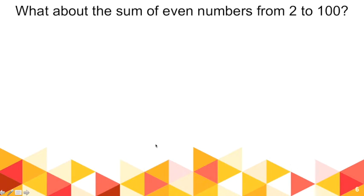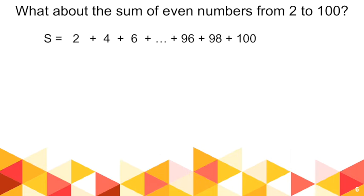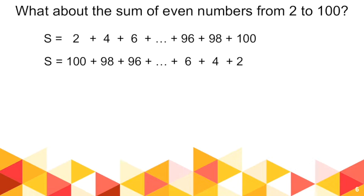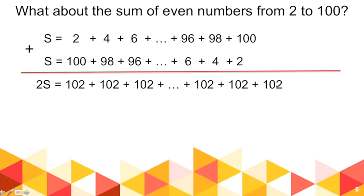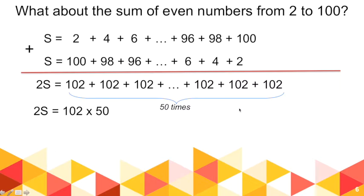Let's use the method of Gauss to find the sum of even numbers from 2 to 100. S is equal to 2 plus 4 plus 6 plus up to 100. And then, just like what Gauss did, we write it in reverse: 100 plus 98 plus 96 up to 2. Adding these two equations gives us 2S. Notice that 2 plus 100 — all pairs of numbers — give us 102. So S now equals 102 plus 102 up to 102. There are 50 such pairs, so 2S equals 102 times 50, and S equals 102 times 50 divided by 2.